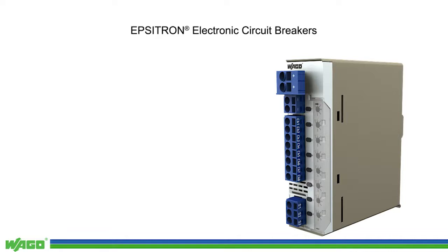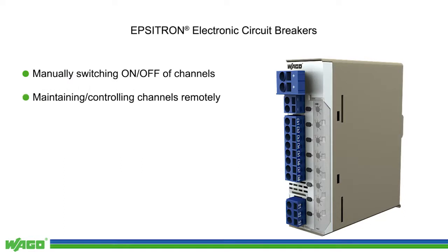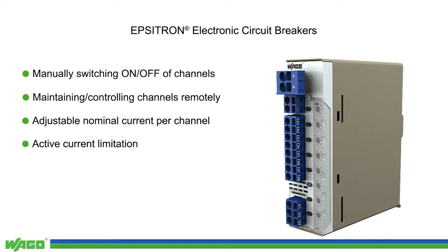WAGO's ECBs provide multiple functionalities, guaranteeing reliable, intelligent, and highly effective protection for your systems. All ECBs feature manually operated channels, allowing one or more channels to be switched on or off. The signal outputs enable remote status diagnostics for each individual channel. Furthermore, individual adjustability guarantees extremely precise tripping operation. Active current limitation prevents the power supply from switching to overload operation, preventing a voltage drop.